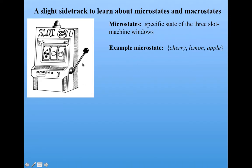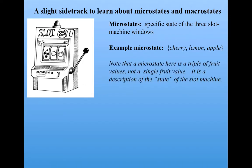Now it's important for you to note that a microstate here is a triple of fruit values, not an individual fruit value. That is, a cherry lemon apple is a microstate, but cherry alone would not be a microstate.